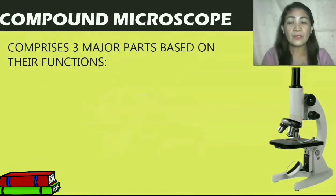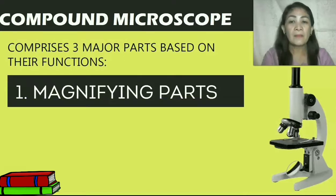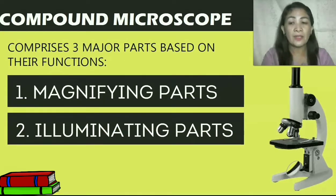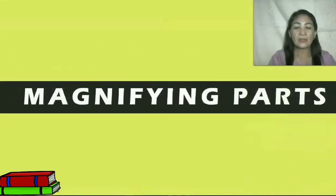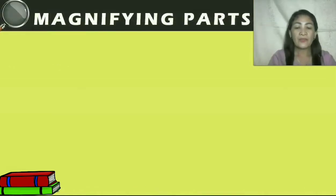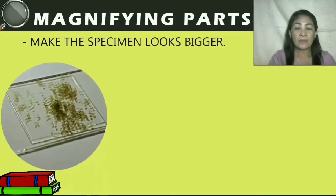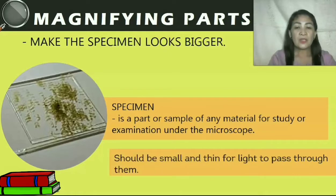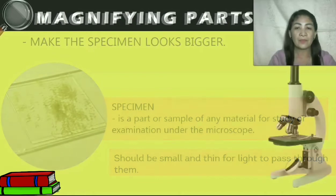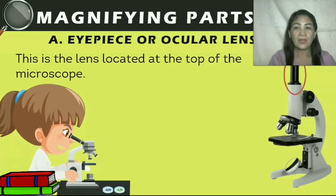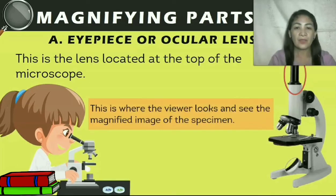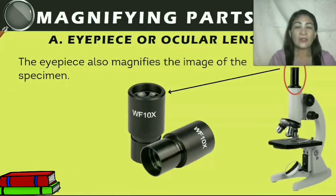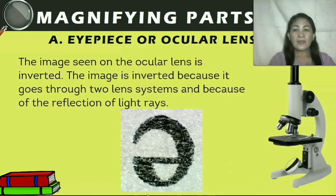A compound microscope comprises three major parts based on their functions: one, magnifying parts; two, illuminating parts; three, mechanical parts. The magnifying parts make the specimen look bigger. A specimen is a part or sample of any material for study or examination under the microscope; it should be small and thin for light to pass through. The first magnifying part is the eyepiece or ocular lens — the lens located at the top of the microscope where the viewer looks and sees the magnified image. Its standard magnification is 10 times. The image seen on the ocular lens is inverted because it goes through two lens systems due to reflection of light rays.